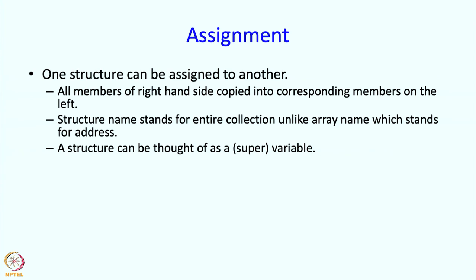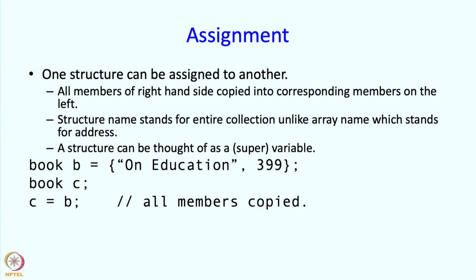As I said earlier, a structure is a variable or you might think of it as a super variable because it contains, you can think of the members being the variables which are contained in this bigger variable. As an example, we have a book B with title on education and price 399. And say we have a book C, so now I can write C equal to B. This will copy both the members. If I print C dot price, the price member of C which has been copied over from B is 399 and so 399 will get printed.